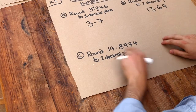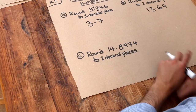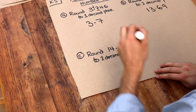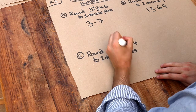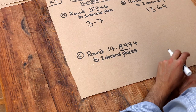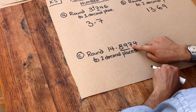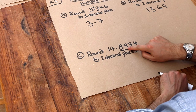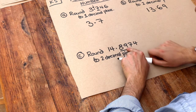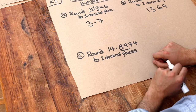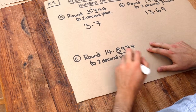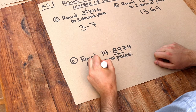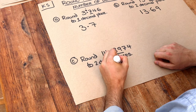And finally, this one down here: we've got 14.8974, and we want to round to two decimal places. It's two decimal places, so I underline two digits after the decimal point, and we check the next digit. Is that 5 or more? Yes, it is. Now that goes up by one, but we can't go up by one without having some kind of carry. And that indeed is what happens — that 89 goes up by one to 90, and we put 14.90.